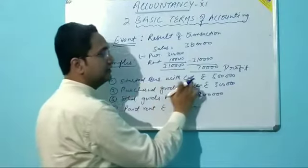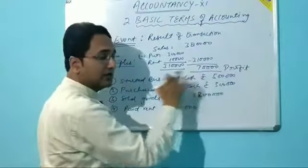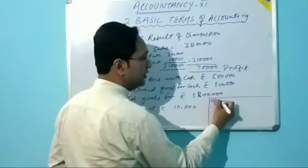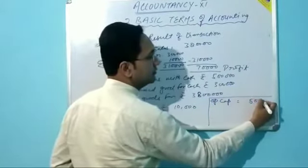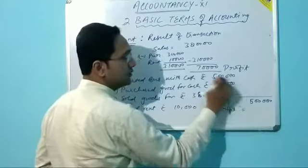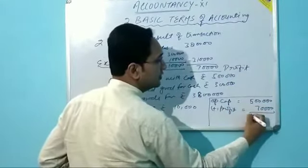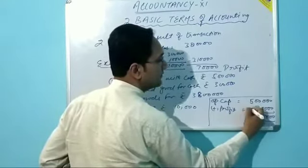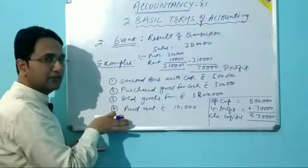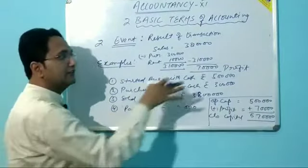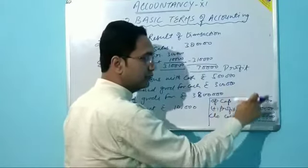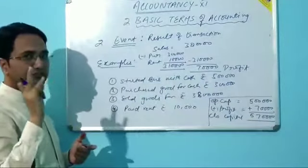Mr. X started business with cash rupees 5 lakhs, so it is called opening capital. To find out the closing capital: opening capital rupees 5 lakhs plus profit 70,000 equals rupees 5 lakhs 70,000 — this is called the closing capital. So the consequences of these transactions result in a profit of 70,000 and also increase our capital from 5 lakhs to rupees 5 lakhs 70,000. I have explained two terms: transaction and events.